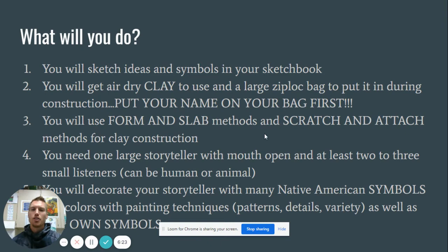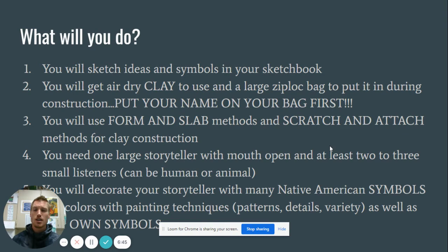The goal: you're going to have one large storyteller with their mouth open telling the story. Then you're going to have at least two to three or more — as many as you want — small listeners. They can be human, they can be animal, they can be any kind of creature you want. You're going to decorate your storyteller when it is dry with Native American symbols. You can tell a story even with those symbols. We're going to use different painting techniques, patterns, details, and variety, as well as coming up with your own symbols. Relate it to your culture and your experience as well.